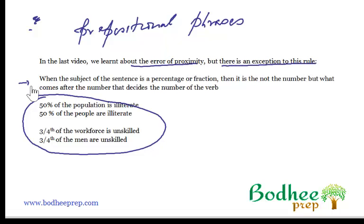And just carefully read this. When the subject of the sentence is a percentage or fraction, then it is not the number, but what comes after the number that decides the number of the verb. For example, now look at this.